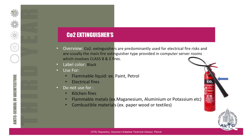CO2 extinguishers are predominantly used for electrical fire risk and are mainly used in computer server rooms, covering Class B and E fires. When a fire starts with electrical equipment, we use CO2 extinguishers. They have a black-colored label with 'CO2' written on it. We should not use these on kitchen fires, flammable metals, or combustible materials.